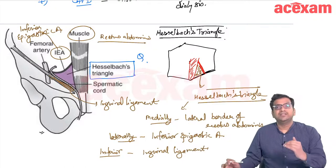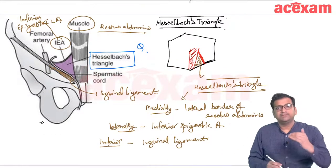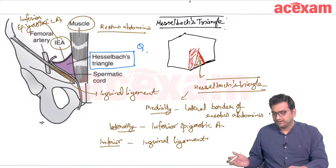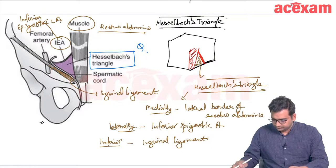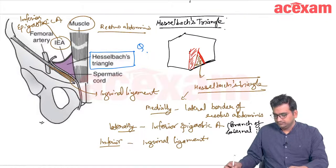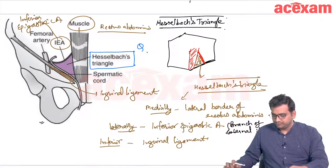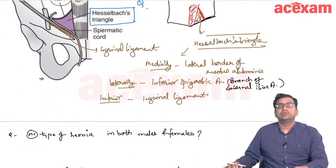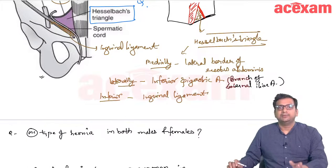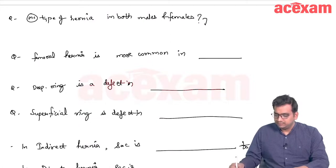The inferior epigastric artery is a branch of the external iliac artery — this is very important from an anatomy standpoint. The most common type of hernia in both males and females is indirect inguinal hernia.